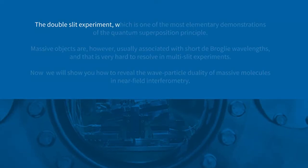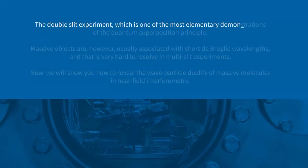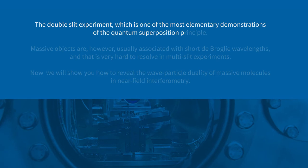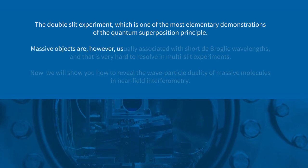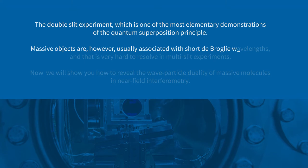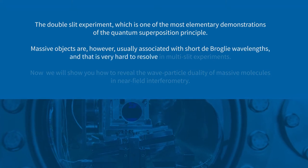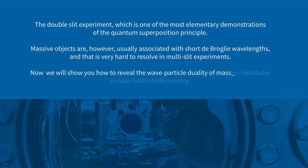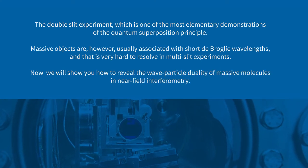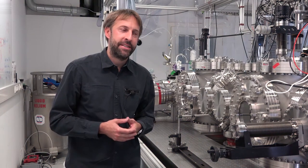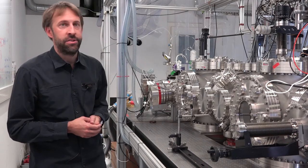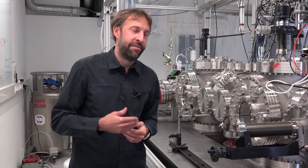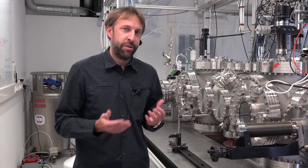You've seen the double slit experiment, which is one of the most elementary demonstrations of the quantum superposition principle. Massive objects are usually associated with very short de Broglie wavelengths that are very hard to resolve in multi-slit experiments. Now we'll show you how to reveal the wave-particle duality of massive molecules in near-field interferometry. If you want to interfere very massive particles and highly polarizable particles, Talbot-Lau interferometry is your concept of choice. It is mathematically more involved and slightly less intuitive than the far field, but the basic principle is this.